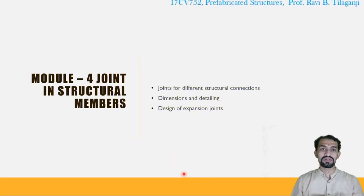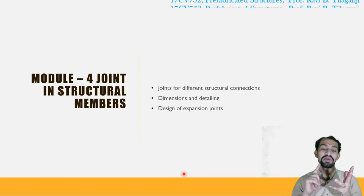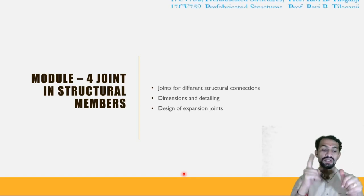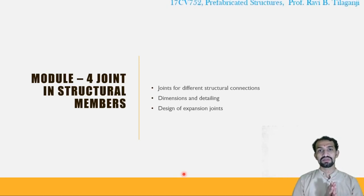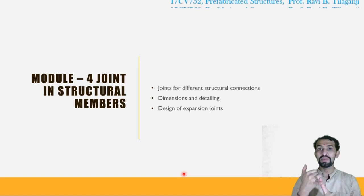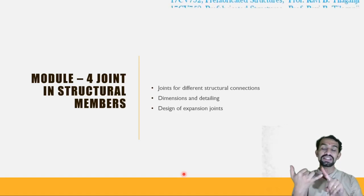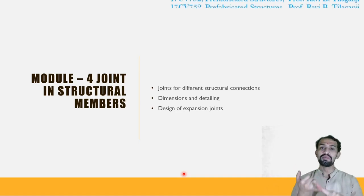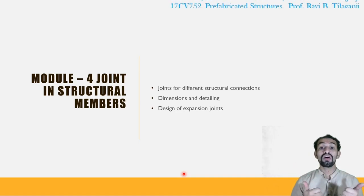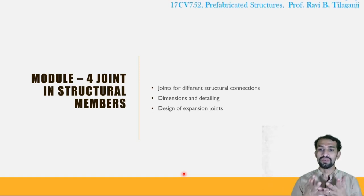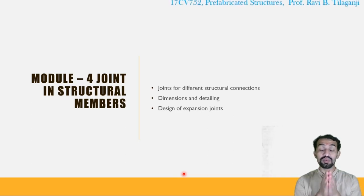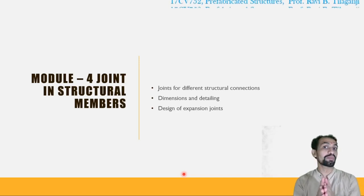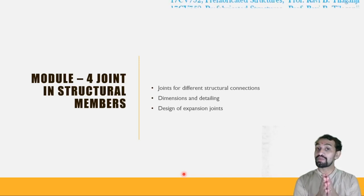Module number 4, joint in structural members. Structural members are what? Slab, beam, column, foundation, plinth beam, lintel. These all are called as structural members. Even sometimes wall is a structural member. Sometimes. Because if we take RCC into consideration for wall, it is a structural member. So, joints for different structural constructions. How we are going to do it. Dimensions and detailing. Dimensions are perfect, needs to be perfect. Detailing. Drawings are prepared in the detail. Design of expansion joints.